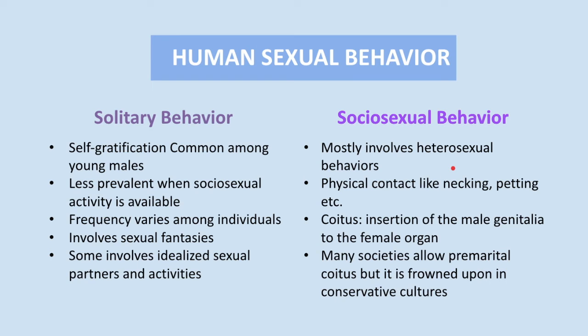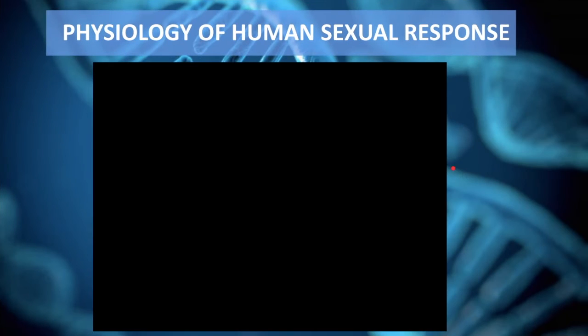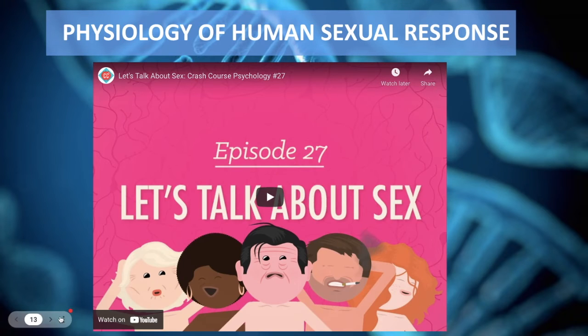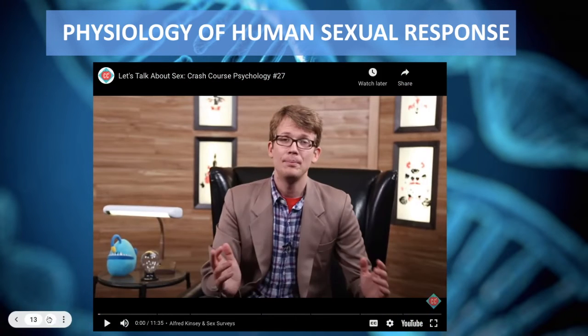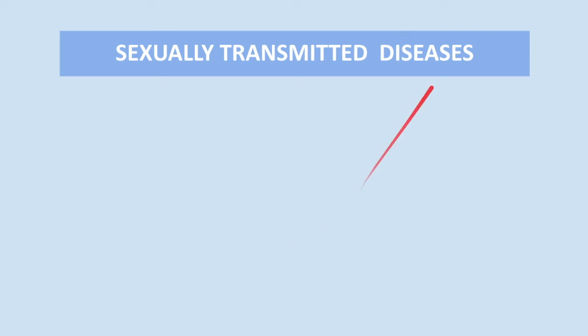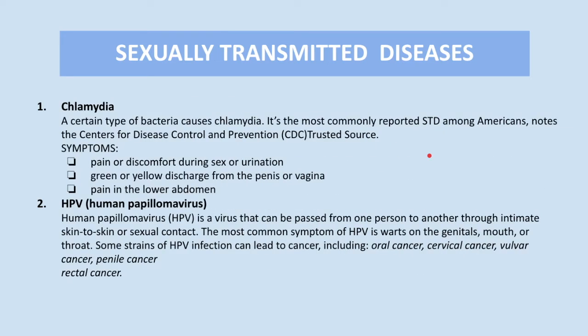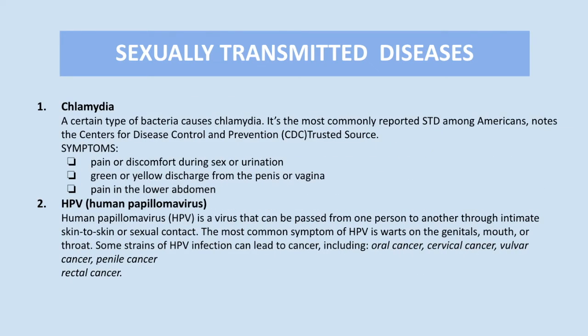Here is another video about the physiology of human sexual response — you can click the link below for more information. Next and more importantly, let us talk about diseases that spread through sexual contact. I wanted to post pictures, but some of you might be eating while watching this, so sorry class if there are no pictures. Number 1: Chlamydia. Chlamydia is caused by a certain type of bacteria. The Centers for Disease Control and Prevention notes that it is the most commonly reported STD among Americans.